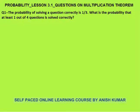Hello, this is probability lesson 3.1. In this I will discuss questions on multiplication theorem. The first question is: the probability of solving a question correctly is 1 by 3. What is the probability that at least 1 out of 4 questions is solved correctly?